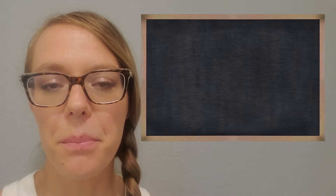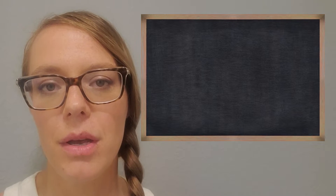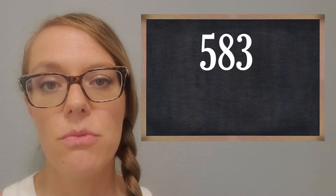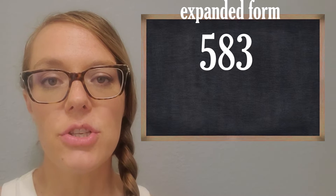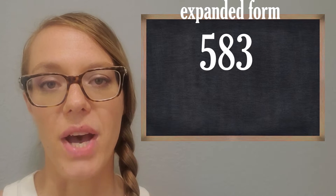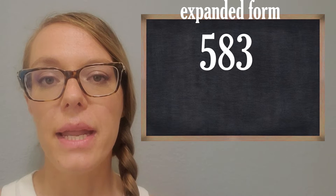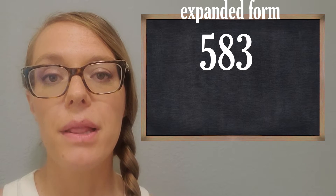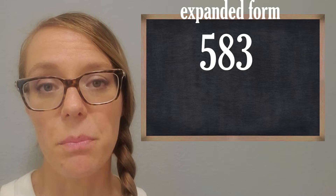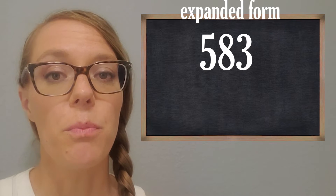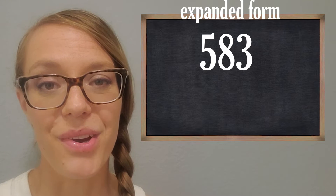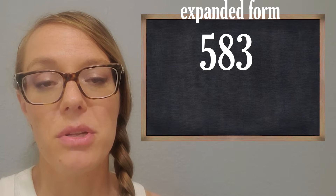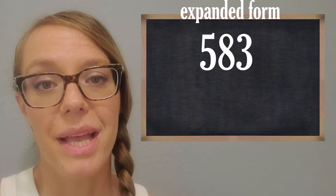Let's start with something pretty easy — a number like 583. Expanded form is really just taking the different digits in the number — the five, eight, and three — and writing or telling how much each is really worth based on what place it's in. Since we talked a lot about place value, this will be easy. That five — how much is that digit worth knowing what place it's in?